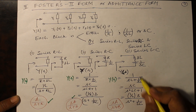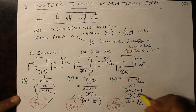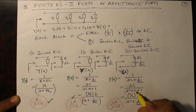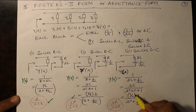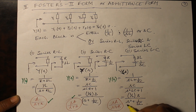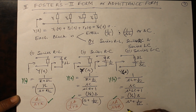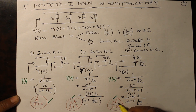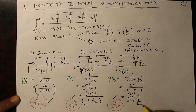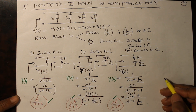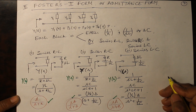For series LC, SC goes to the numerator giving S²LC plus 1 in the denominator. Taking LC common, C cancels and L comes to the numerator as 1/L, giving (1/L)·S divided by S² plus 1/LC. This is of the form SA/(S² + B) where A equals 1/L, so L equals 1/A, and B equals 1/LC, from which C can be found. This is how you attempt questions of Foster's Form 1 and Foster's Form 2.